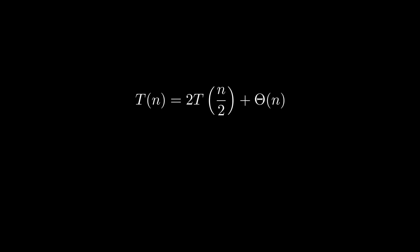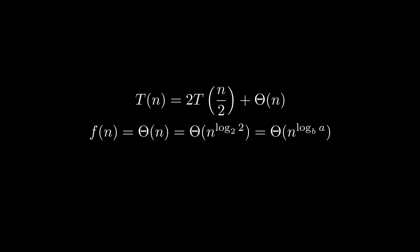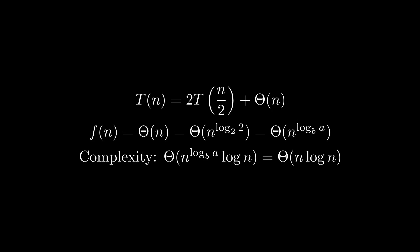As another example, consider the recurrence relation T(n) = 2·T(n/2) + Θ(n). This is a very typical form of recurrence relation that we will encounter when looking at sorting algorithms in the next video. In this case, A = 2, B = 2, and F(n) = Θ(n). Specifically, F(n) = Θ(n) = Θ(n^(log_2 2)) = Θ(n^(log_B A)). Hence, case 2 of the master theorem applies, which means the complexity is Θ(n^(log_B A) · log n), which in this case is simply Θ(n log n).